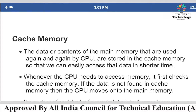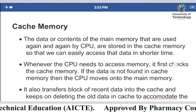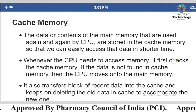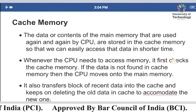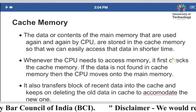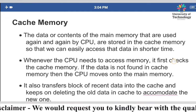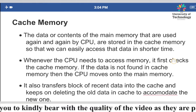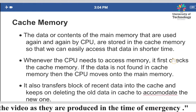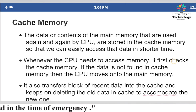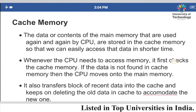Now we will understand what cache memory is. The data or content of the main memory that is used again and again by the CPU — data that we have to use instantly and frequently — is stored in cache memory. Some data needs to be used frequently by the CPU.